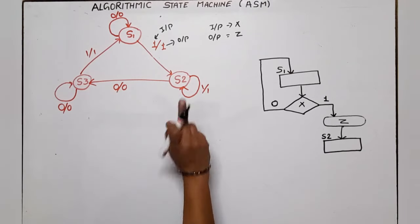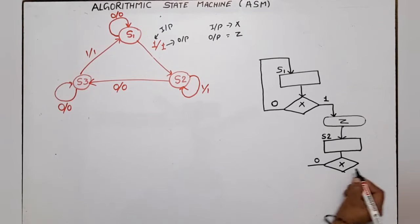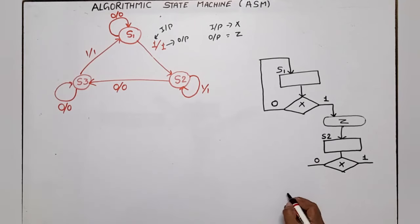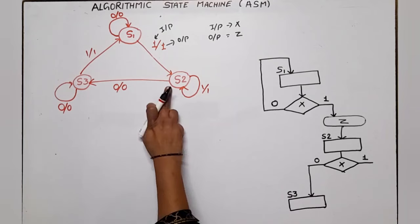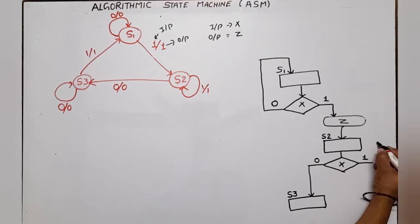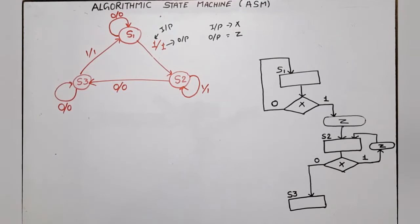Now for state S2, again there are 0 and 1 input conditions, so one decision box with variable X is added. One path for X=0 and one path for X=1. If X is equal to 0, the next state is S3 and output is 0, so no conditional box required — the exit path goes directly to S3. For the case when X=1 on S2, the present state is S2, input is 1, output is 1, and next state is S2 again. So a conditional box with Z=1 is used, and its exit point goes back to S2.